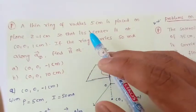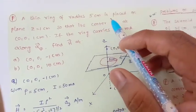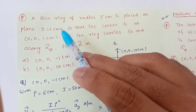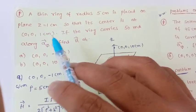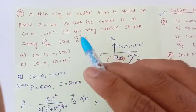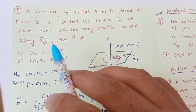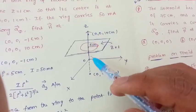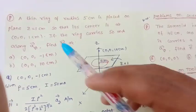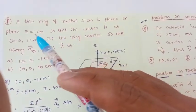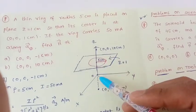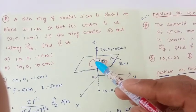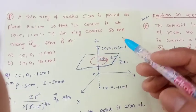Now the next problem: a thin ring of radius 5 centimeters is placed at z = 1 centimeter so that its center is at (0, 0, 1 cm). If the ring carries 50 milliamperes along the φ-direction, we have to find the magnetic field intensity at two points. In the Cartesian coordinate system, the ring of 5 cm radius is placed at z = 1 cm.